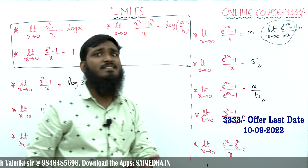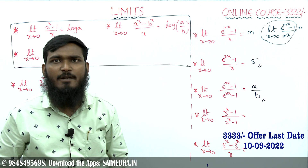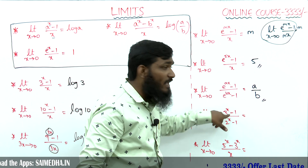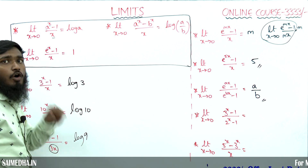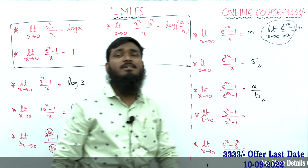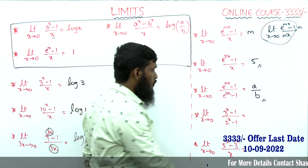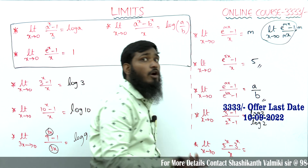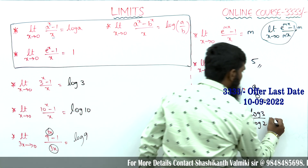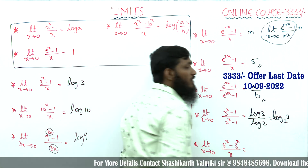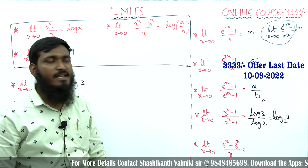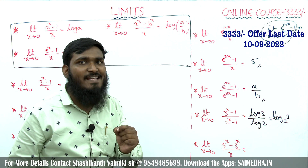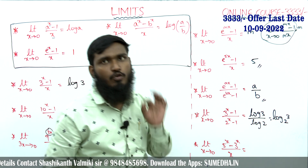Next: limit x tends to 0, 3^x minus 1 divided by 2^x minus 1. Again, no division by x, so divide both by x. Then 3^x minus 1 over x gives log 3, and 2^x minus 1 over x gives log 2, so we get log 3 divided by log 2. Using the change-of-base formula, log a divided by log b equals log_b(a), so this equals log base 2 of 3.